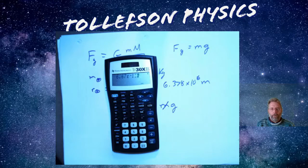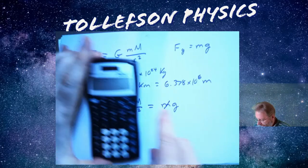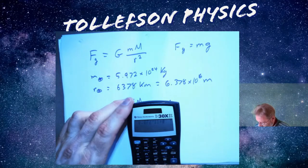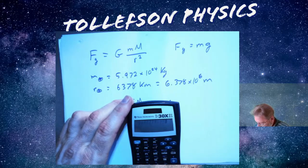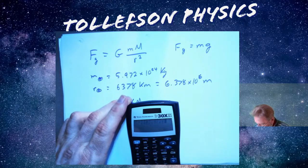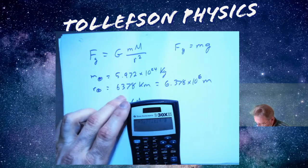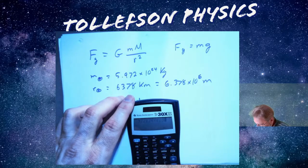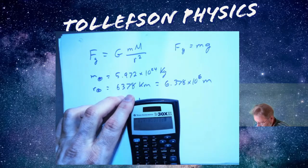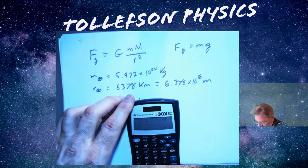What do I have to multiply by? I got to multiply by the mass of Earth, so times 5.972 EE 24, and then I need to divide by 6.378 EE 6, and I will square that and hit equals.